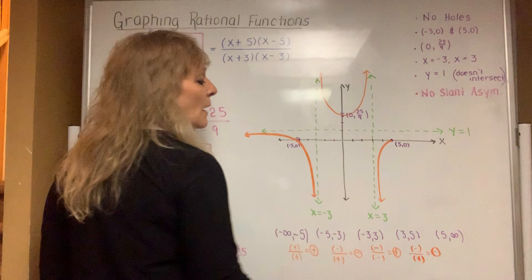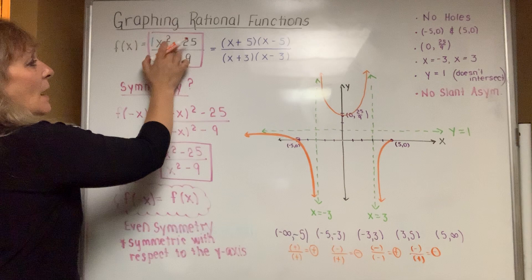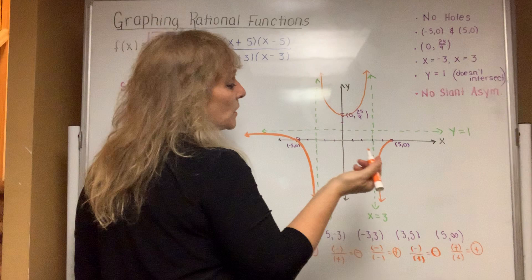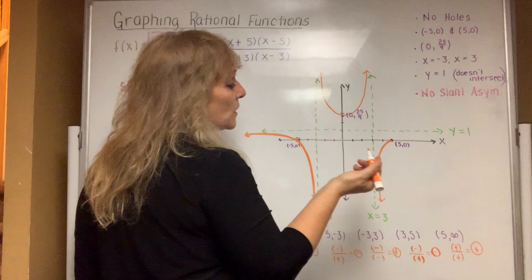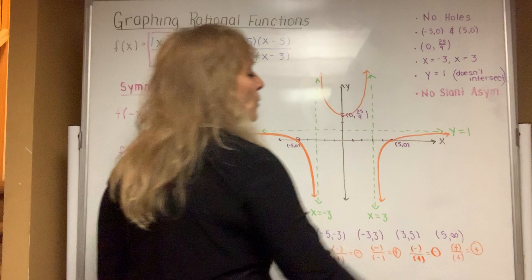Finally, from 5 to infinity, pick 10: 100 minus 25 is positive, 100 minus 9 is positive, so positive divided by positive is positive — above the x-axis, but not skyrocketing up because the curve gravitates towards the horizontal asymptote. That shape can be folded over the y-axis and it folds right on top of itself nicely, confirming even symmetry. And that is how you do the first question.